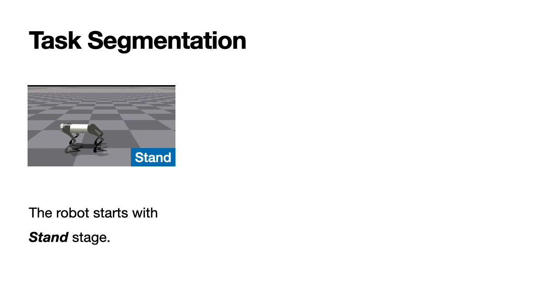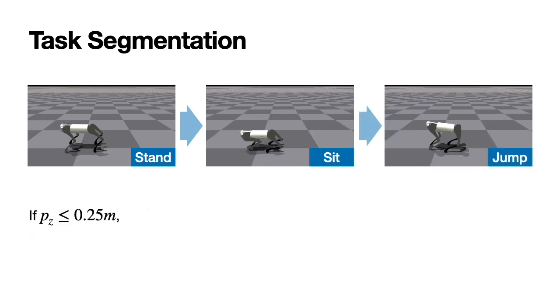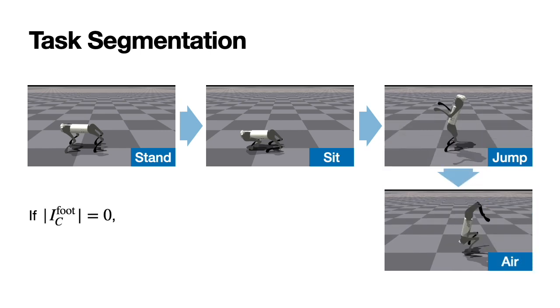The robot starts in the standing stage, and when a jump command is given, it transitions to the sitting stage. Once the robot sits sufficiently, it moves to the jump stage. When the robot's feet leave the ground, it transitions to the air stage.